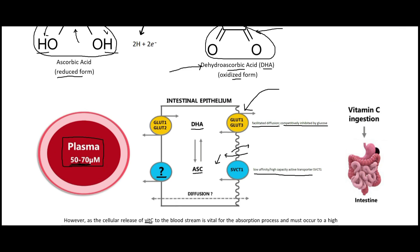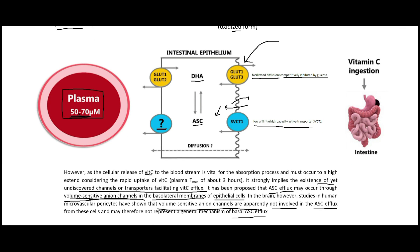That was it for this video — surprisingly little information for such a popular vitamin. The take-home message: in the ascorbic acid form, it's the sodium-dependent vitamin C transporter 1 (SVCT1) taking it from the intestinal lumen into the enterocytes, and it's possibly volume-sensitive anion channels bringing ascorbic acid into the blood. The DHA oxidized form can diffuse in through facilitated diffusion via GLUT1 and GLUT3, which are also used in carbohydrate absorption. See you in the next one.